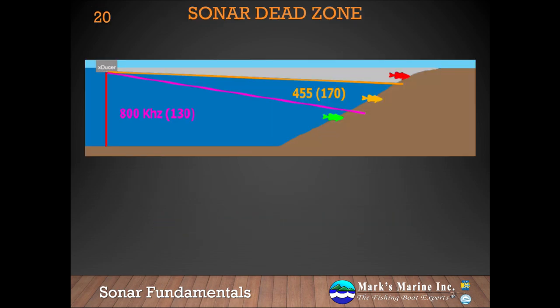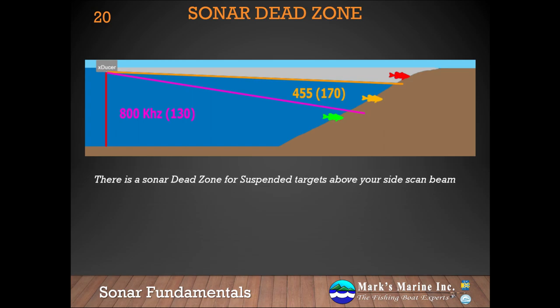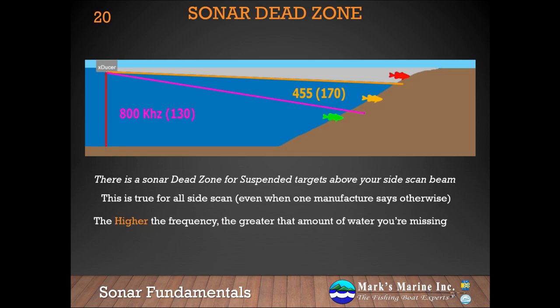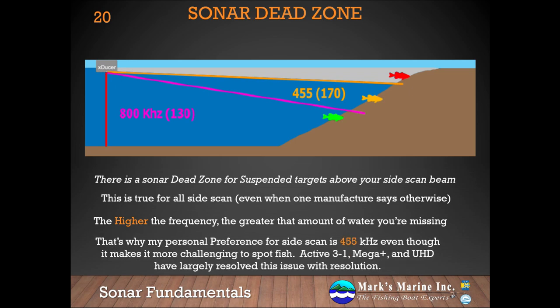Let's talk about the sonar dead zone — the area above your sidescan beam. The lower the frequency, the smaller this dead zone will be; the higher the frequency, the larger this dead zone will be. In the example, we have an 800 kilohertz beam and a 455 kilohertz beam, with three targets. The green fish shows up in both frequencies. The orange fish would only show up in 455 kilohertz, and the red fish is too shallow for either beam to pick up. The dead zone is one of the primary reasons I personally prefer 455 kilohertz for my sidescan beam, even though it makes it more challenging to spot fish due to weaker shadows. I use contrast to make up for this, and with the Active 3-in-1 Mega Plus or the new Garmin UHD transducers, the issue is largely resolved.